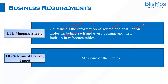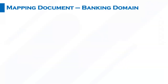The ETL mapping sheet contains all the information of source and destination, including each and every column, their transformations, and reference table lookups. It also includes what kind of transformation is being done on different columns. The second document is the DB schema of the source and the target. When we talk about a schema, we are talking about the structure of the source tables and also the target tables, which must also be part of the BRD.